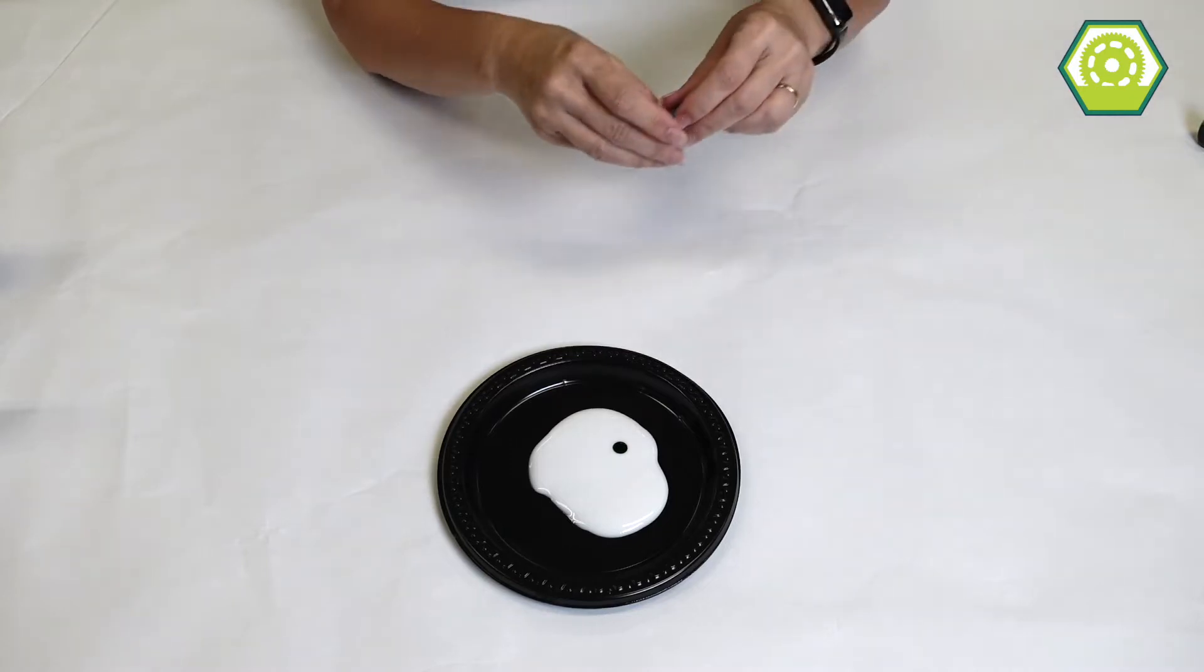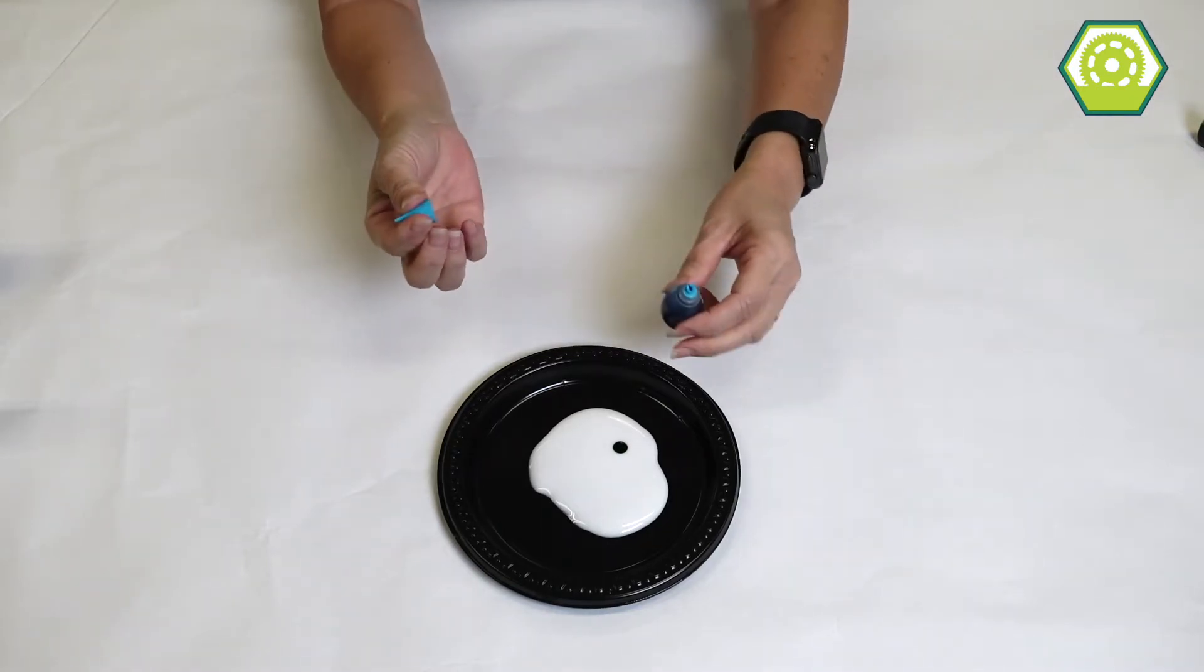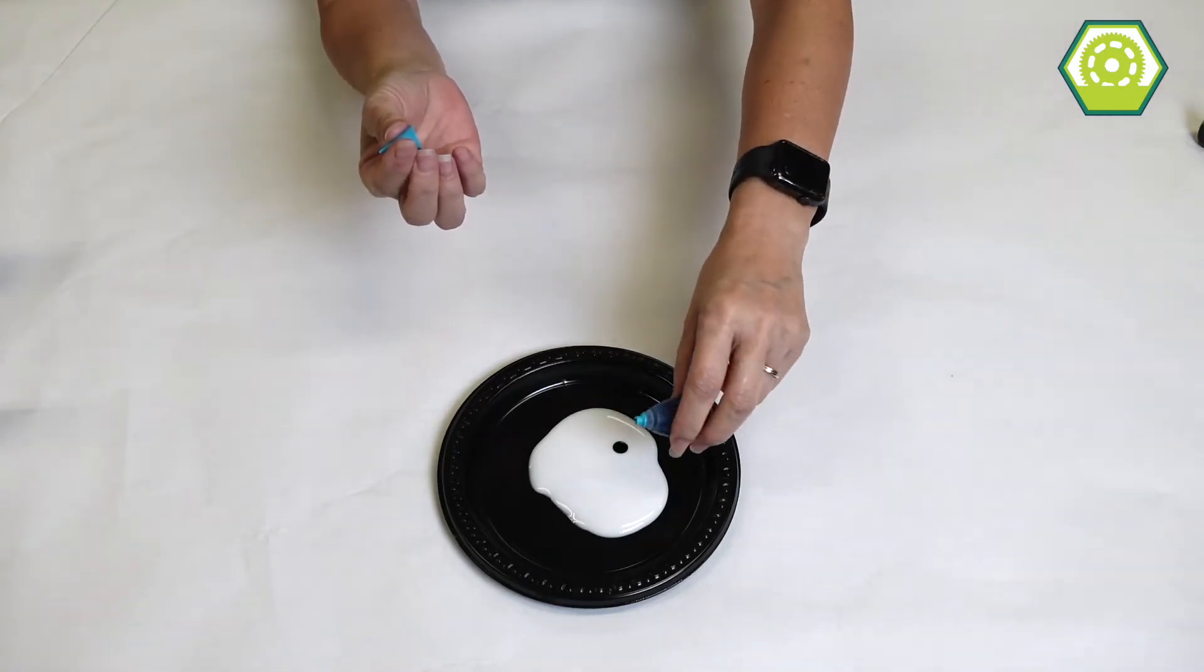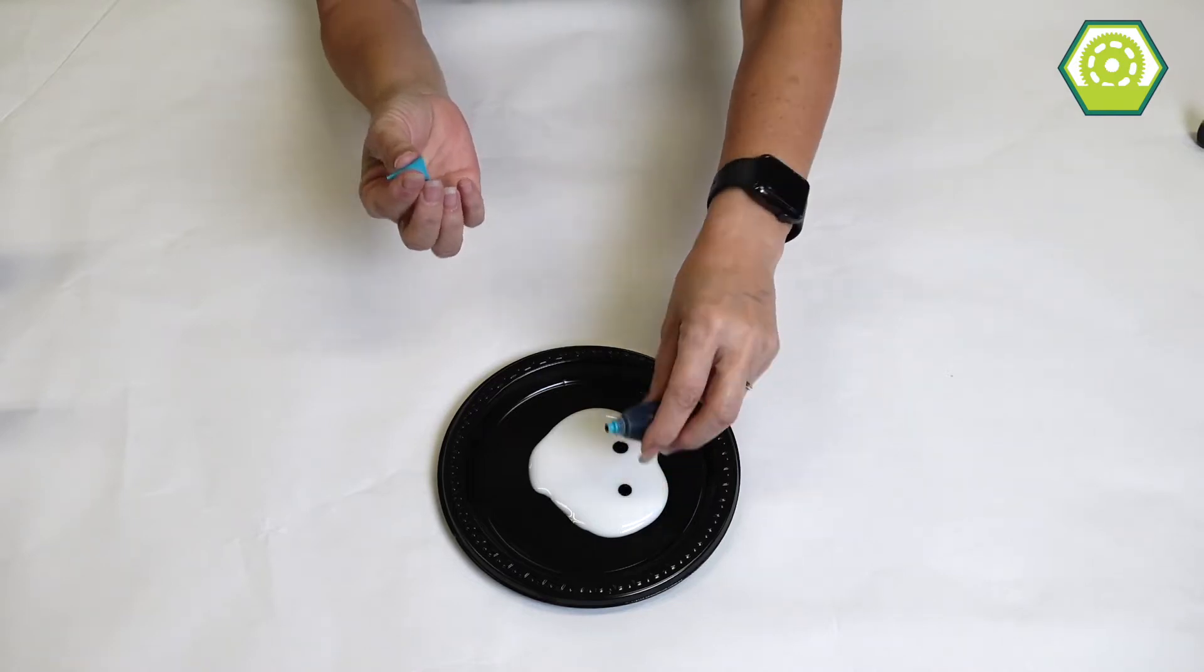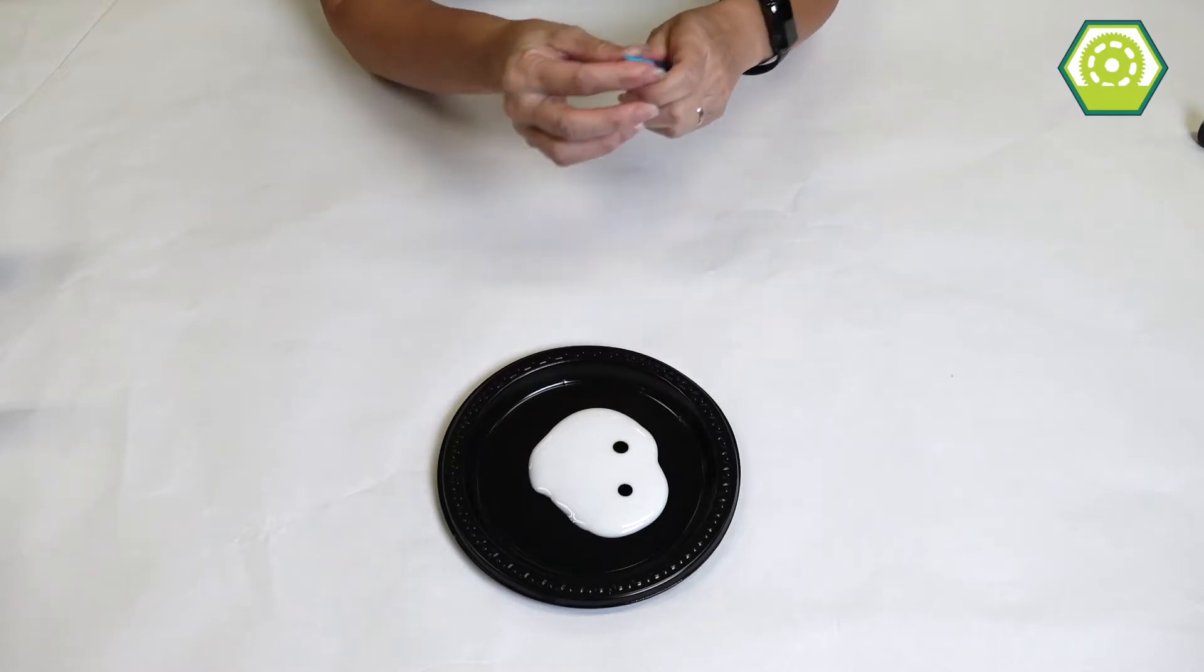We're just gonna do maybe three to four. I have four food coloring colors so I'm gonna use four and I'm gonna have four drops.